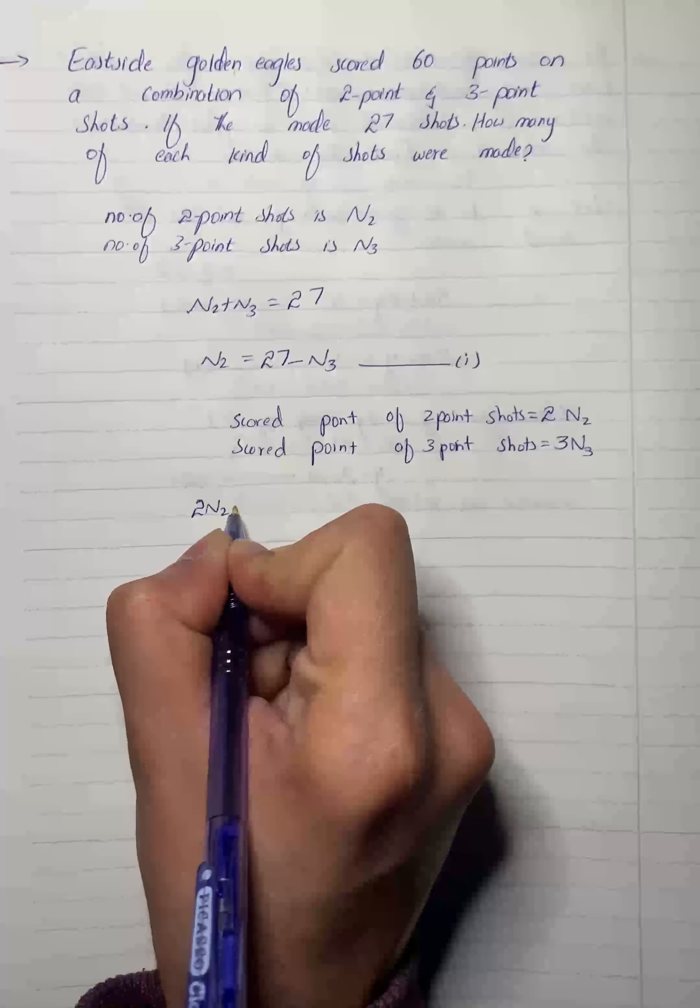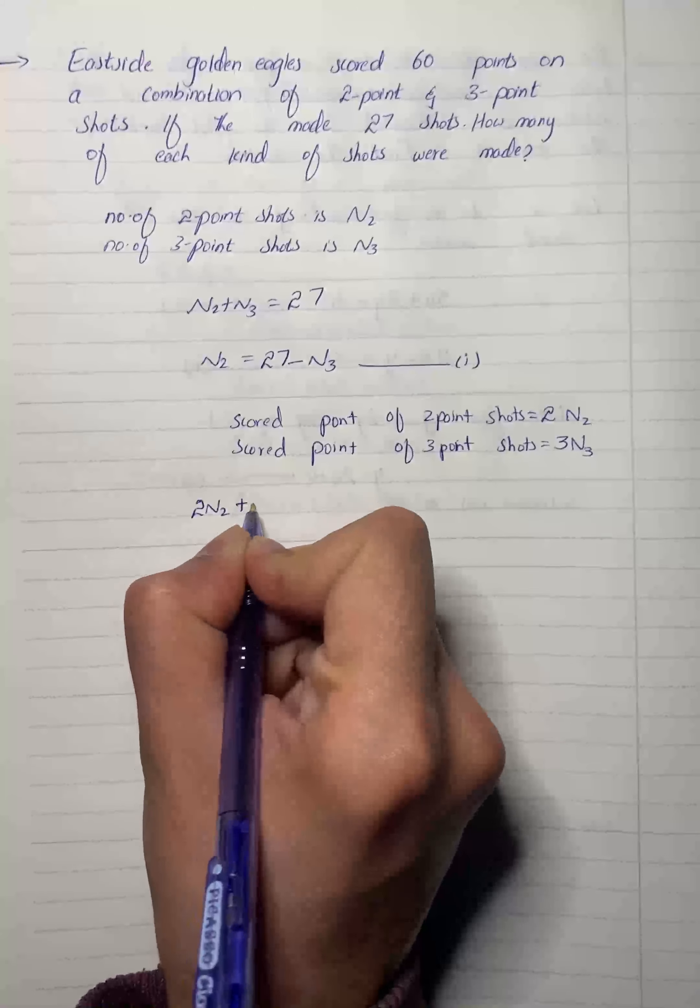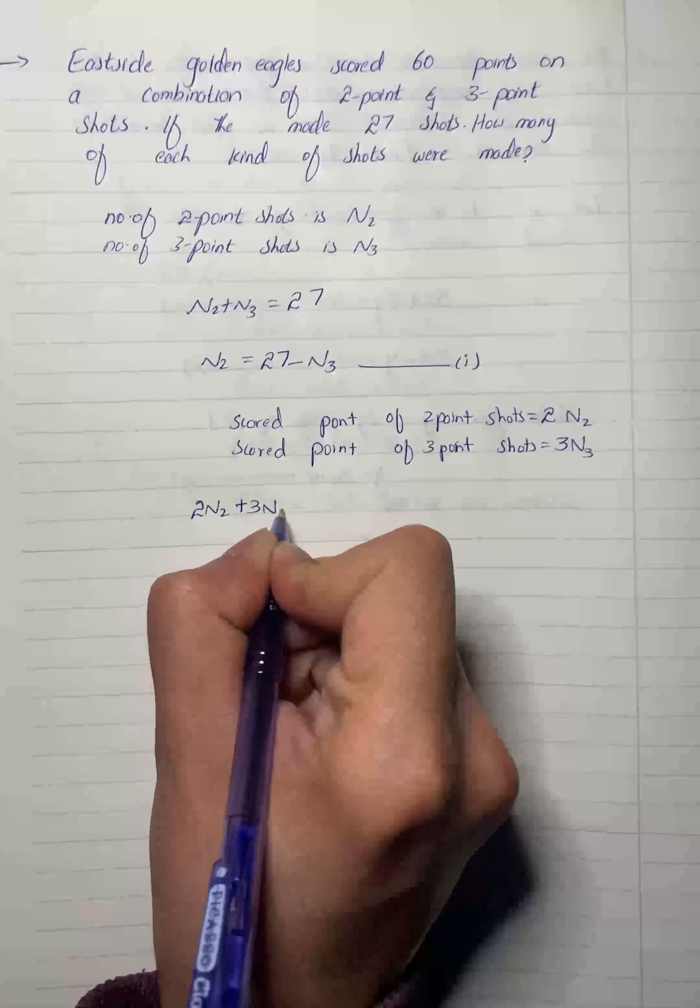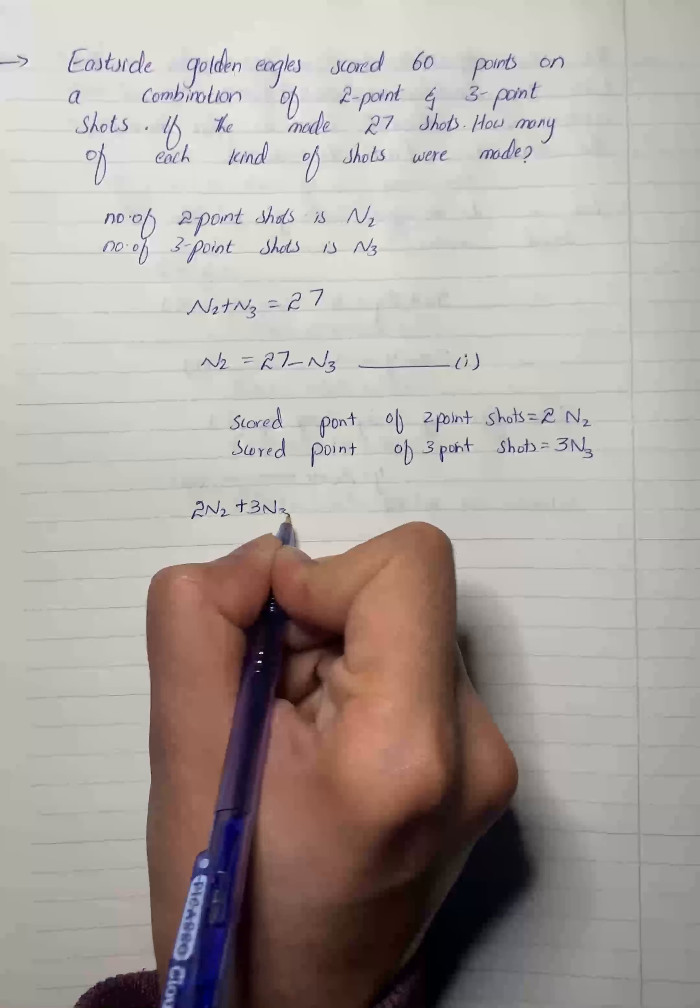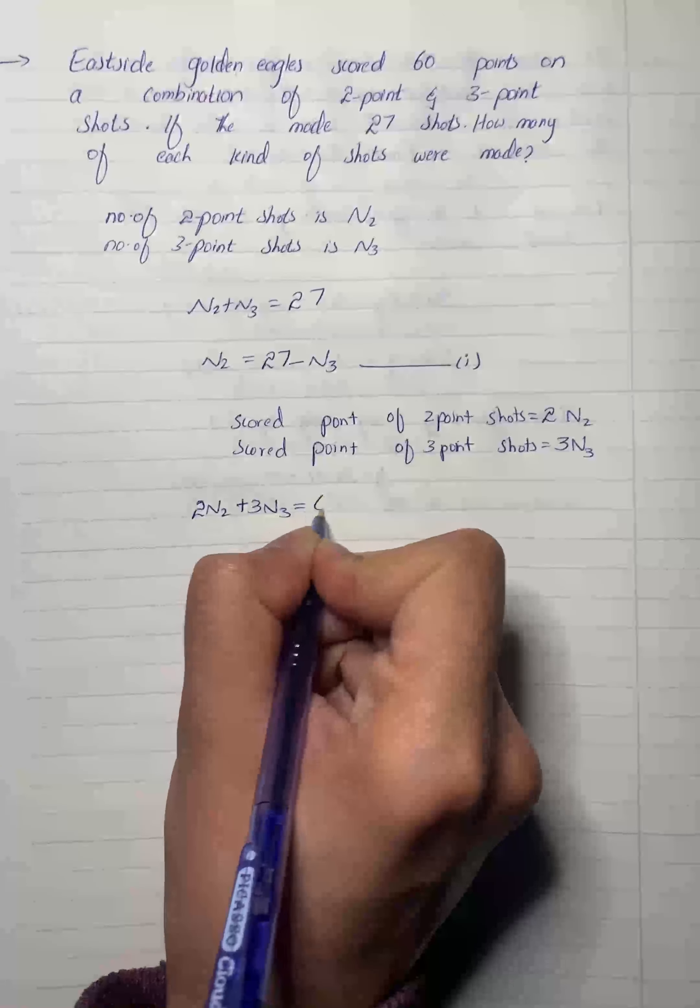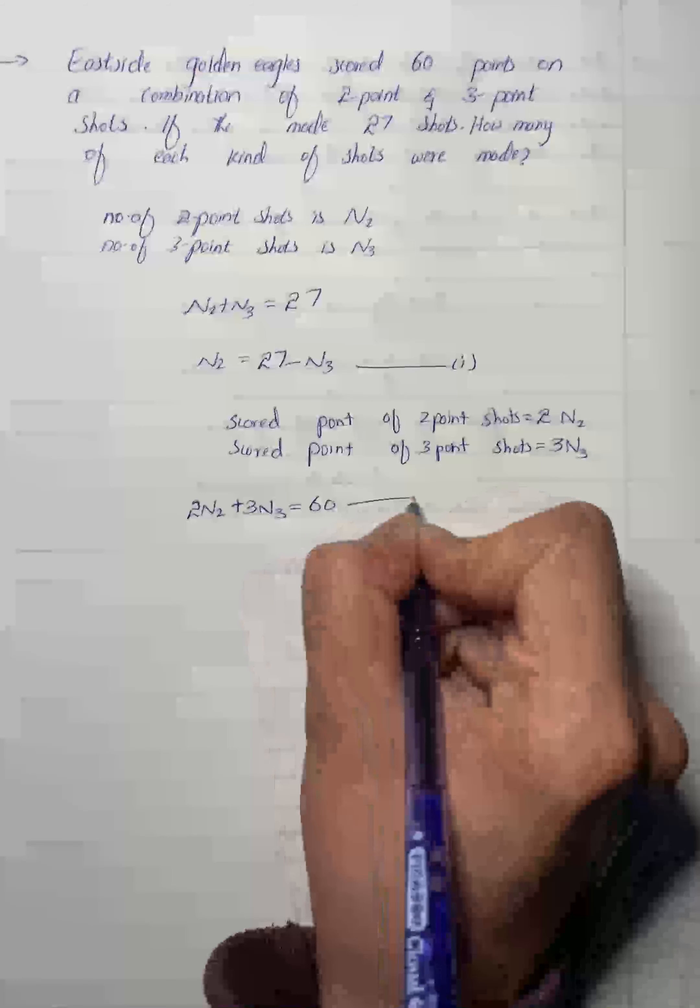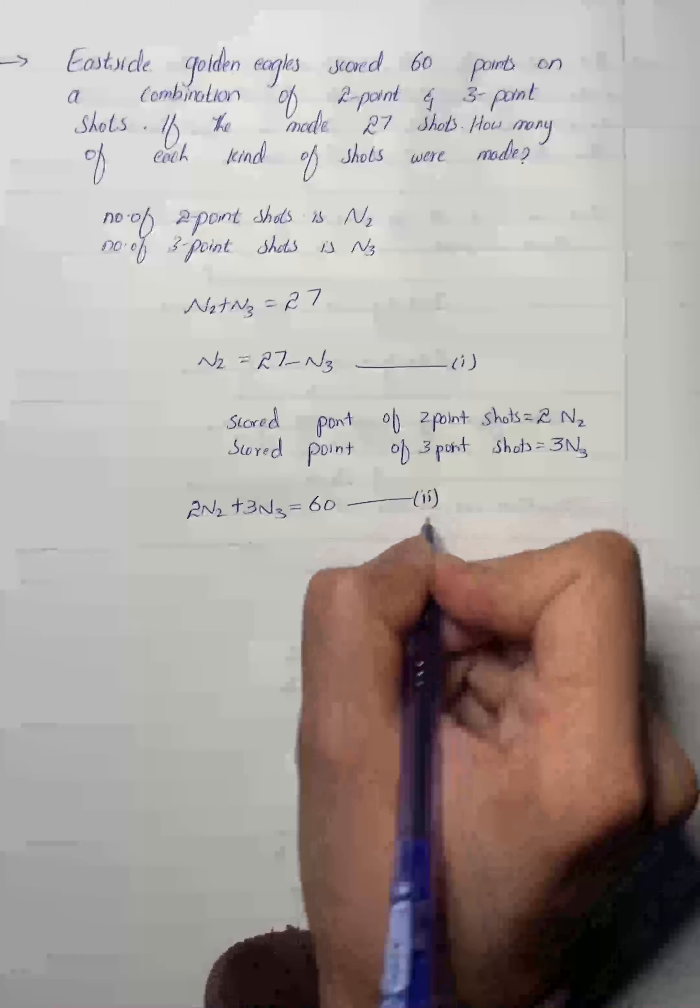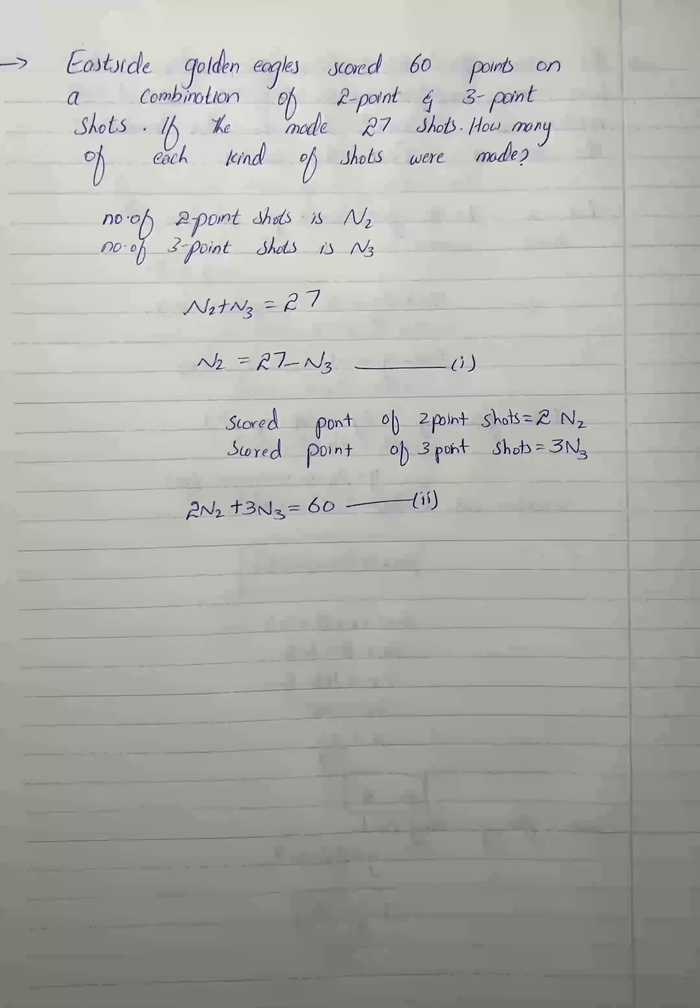Thus, from the given we can conclude that 2 times n2 plus 3 times n3 as a whole will make 60. Name this equation as equation number 2.